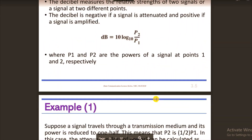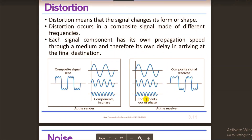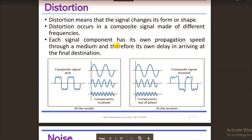This is Distortion. Distortion means that the signal changes its form or shape. Distortion occurs in a composite signal made of different frequencies. The signal is a composite signal, and the composite signal can be decomposed into simple sine waves.